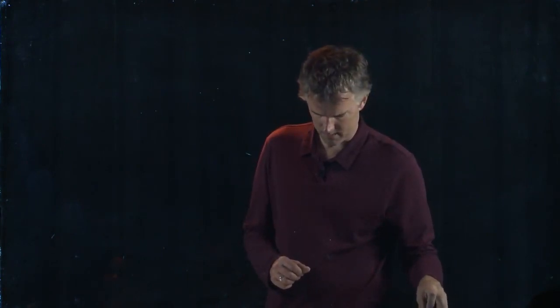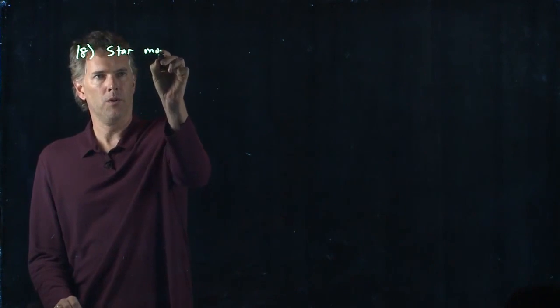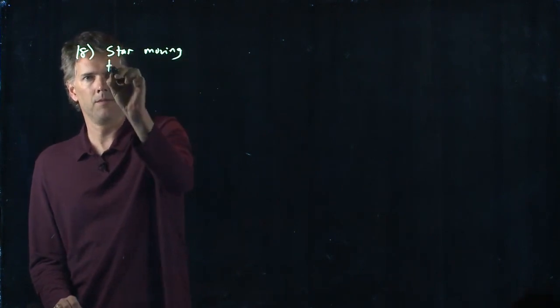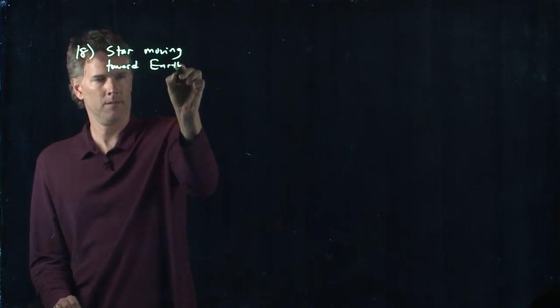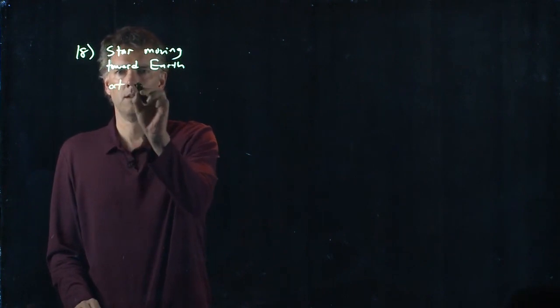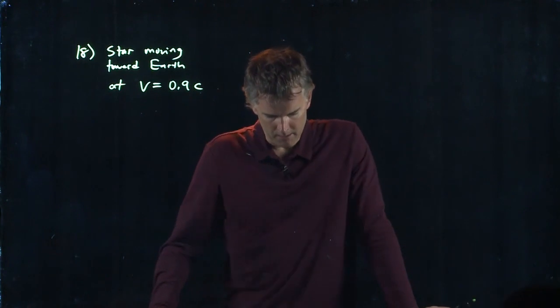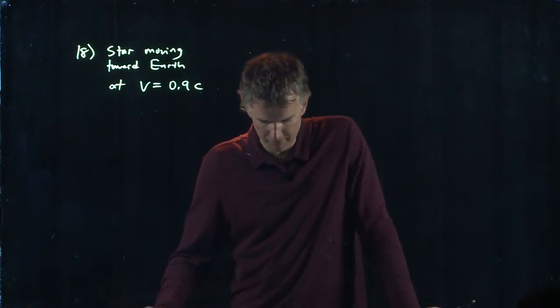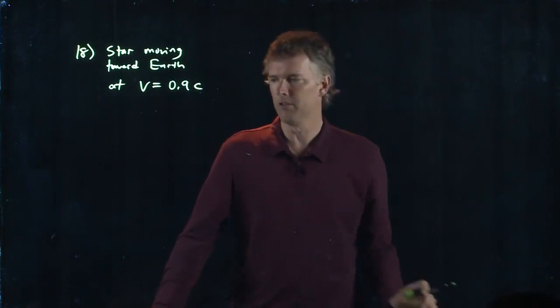Alright let's just do the last one, number 18. So a star is moving toward Earth and it's moving at a speed of 90% the speed of light. The star emits light which moves away from the star at the speed of light. What do Earth-based astronomers measure for the speed of this light?